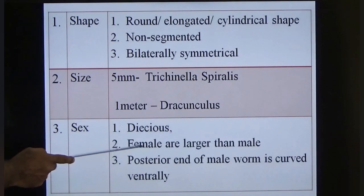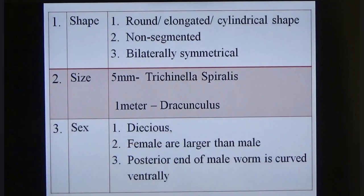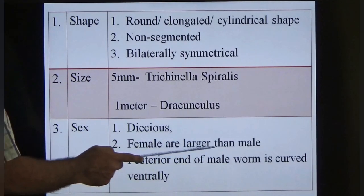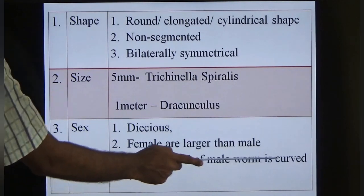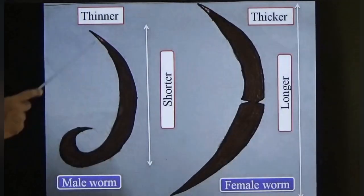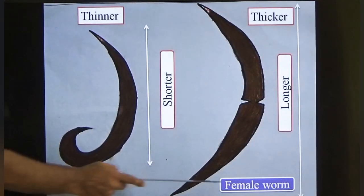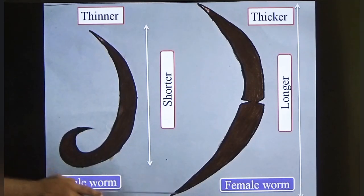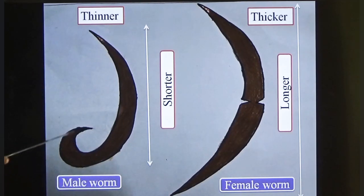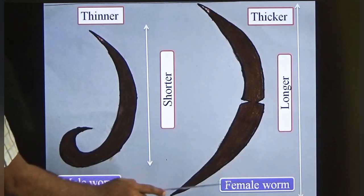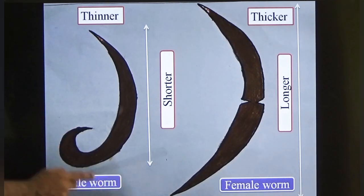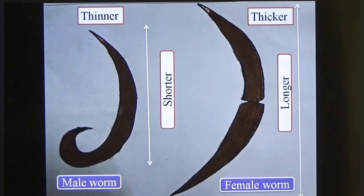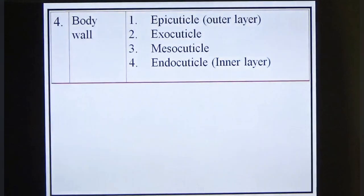The third characteristic is that nematodes are dioecious — meaning male and female parasites are different. Females are larger than males. The posterior end of the male worm is curved ventrally, whereas in the female it is straight. Male worms are shorter than female worms.